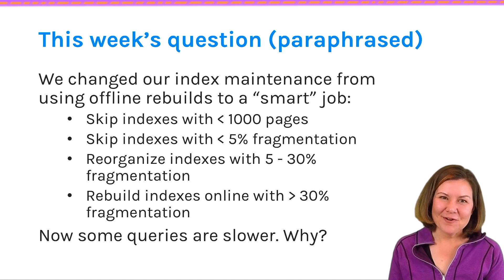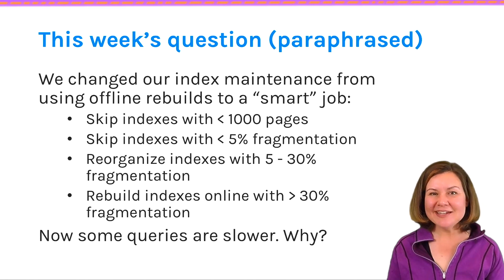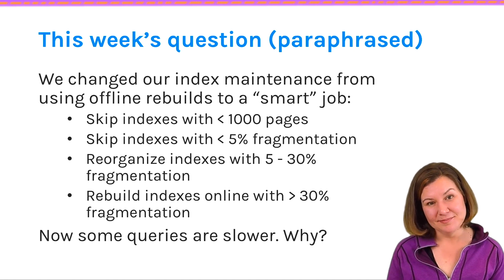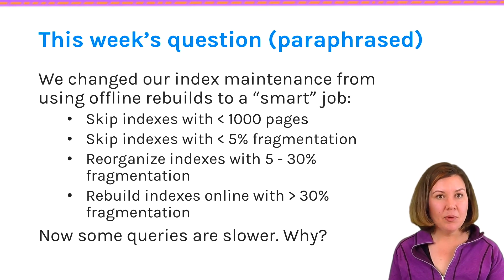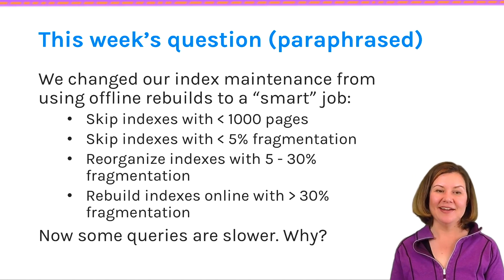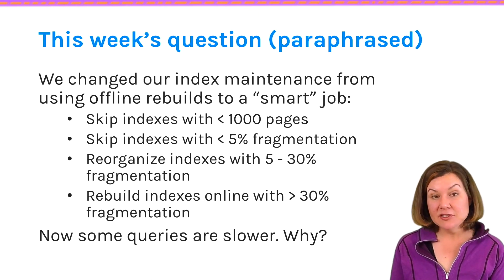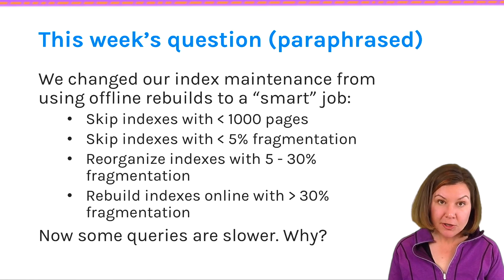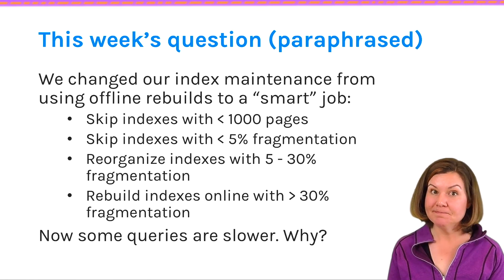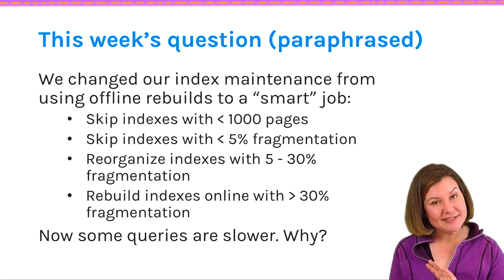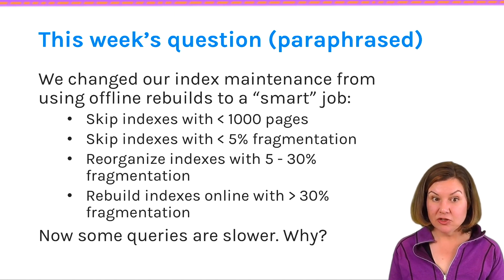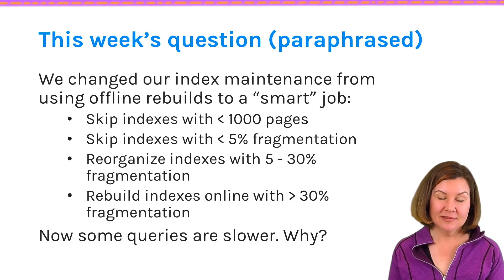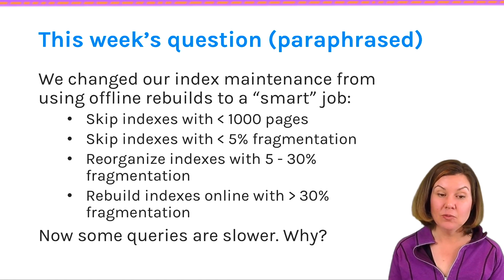Getting to this week's question for Dear SQL DBA — here's the story of the change in index maintenance. Before the change, index maintenance was just an offline index rebuild: a simple job that rolled through and rebuilt all the indexes. This was replaced with a smarter index maintenance job. The smarter job skips indexes that have less than 1,000 pages. If an index is less than 5% fragmented, it skips that too. If an index has between 5% and 30% fragmentation, it will be reorganized. If an index has more than 30% fragmentation, it will be rebuilt online.